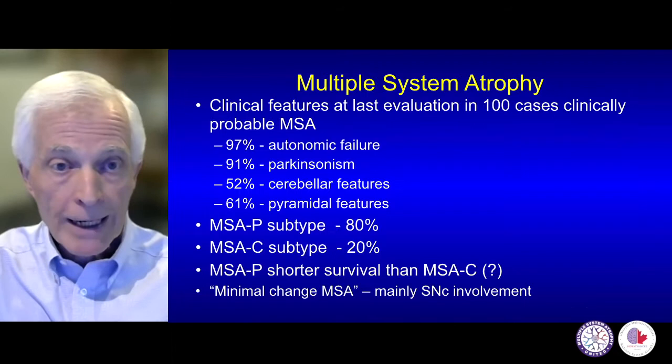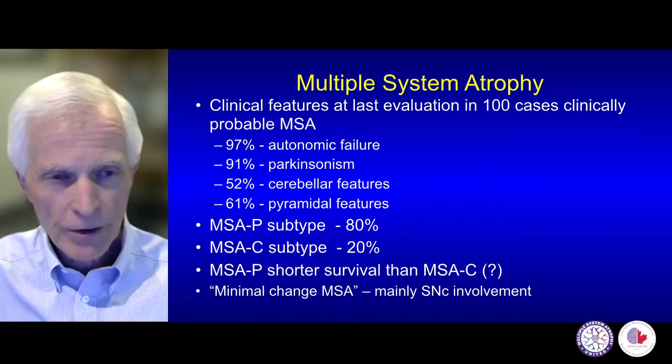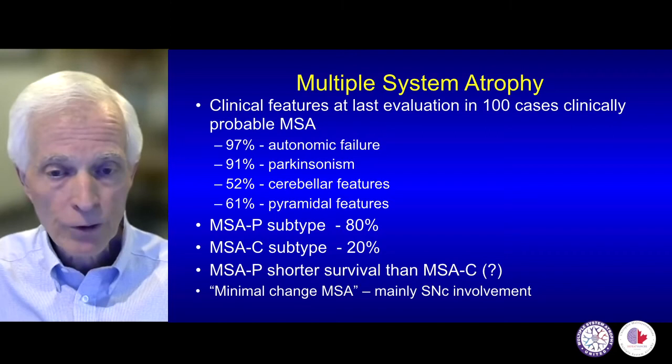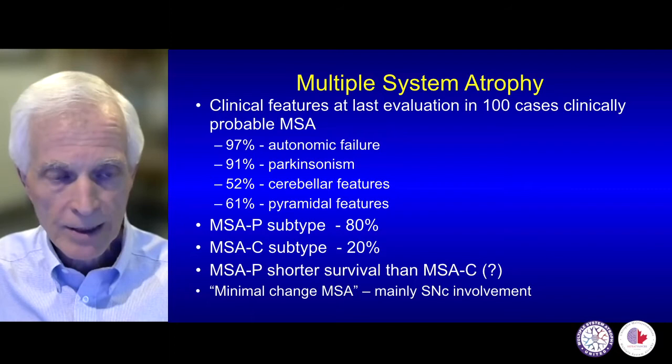A very high proportion of patients have autonomic failure, and this is almost needed to make a diagnosis. A large proportion, especially Caucasians, have Parkinsonism. A smaller proportion, possibly more frequently in Asian populations, have ataxia or cerebellar features. And there are also features of pyramidal tract dysfunction, sometimes with spasticity.